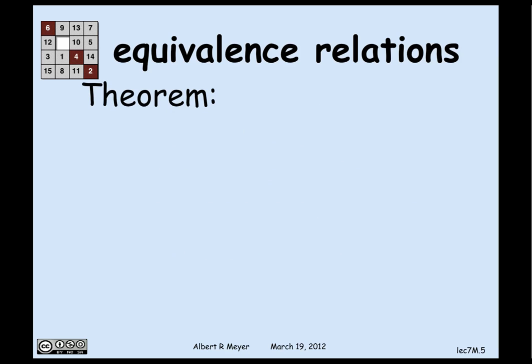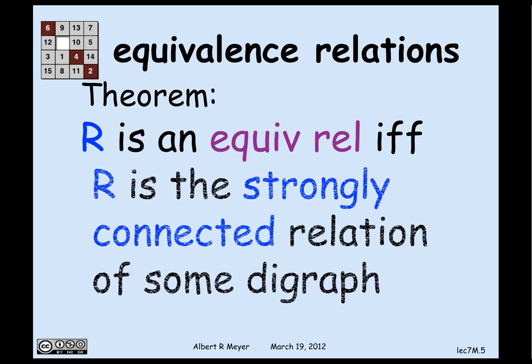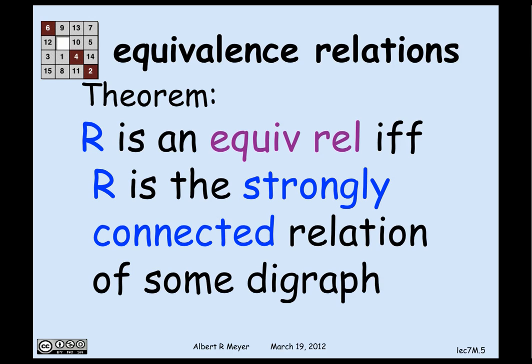The theorem is that, conversely, any equivalence relation is the strongly connected relation of some digraph. The proof is trivial — it is the strongly connected relation of itself.